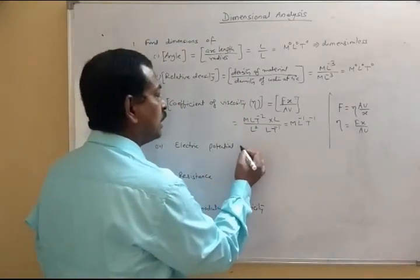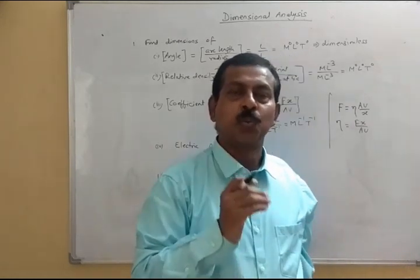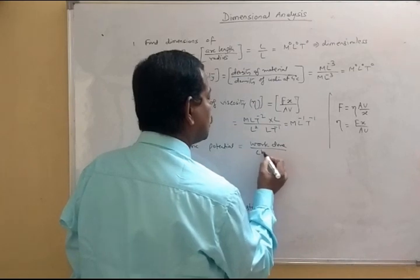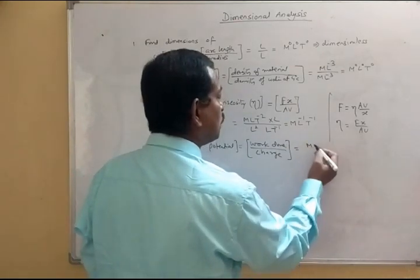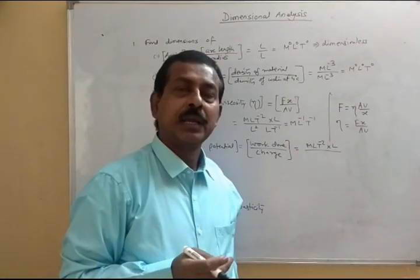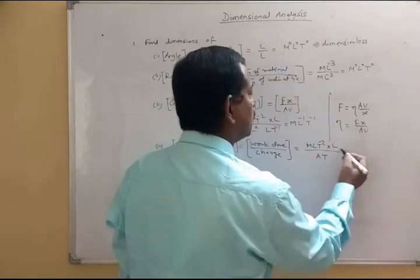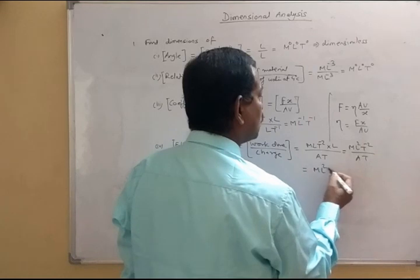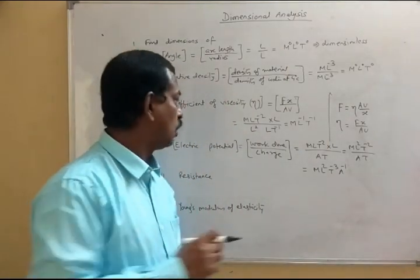Now it is electric potential. This is the work done in moving a unit positive charge from infinity to a given point — basically work done per unit positive test charge. If you take its dimension: work done is force into displacement, which is M L T⁻² into L. Charge is current into time, so it is A·T. This gives M L² T⁻² divided by A·T, which is M L² T⁻³ A⁻¹. This is the dimension of electric potential.